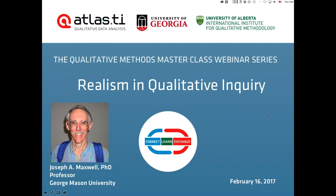Joseph Maxwell is a professor in the Research Methods Program in the College of Education and Human Development at George Mason University. His doctoral degree is in Anthropology, but for the past 35 years, his research and teaching has been mainly in education with increasing focus on methodology. He is the author of Qualitative Research Design: An Interactive Approach, and A Realist Approach for Qualitative Research, as well as articles on qualitative and mixed methods research, Native American societies, and medical education. His current research deals with using qualitative methods for causal explanation, validity in qualitative and quantitative research, the history and breadth of mixed methods research, and the value of philosophic realism for research.